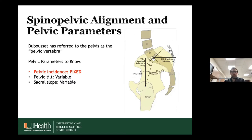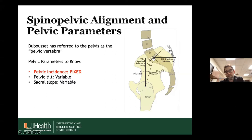A key concept of spinal alignment is that the spine and pelvis together provide comfortable anti-gravity posture, and the pelvis serves as the foundation for overall sagittal alignment. Dubosset actually called the pelvis the 'pelvic vertebrae,' emphasizing how intimately related it is with the spine. From the pelvis, there are three parameters you need to know: pelvic incidence, pelvic tilt, and sacral slope.